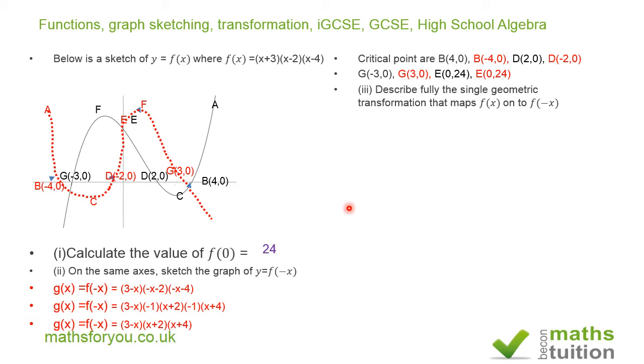For the third question, it says describe fully the single geometric transformation that maps function f of x onto function f of minus x. And clearly, it has got to be transformation by reflection on the y-axis. For that, you get another two marks.